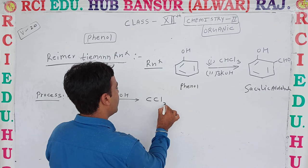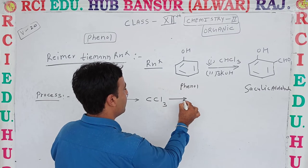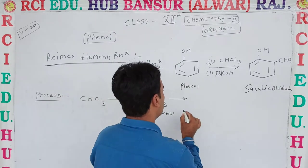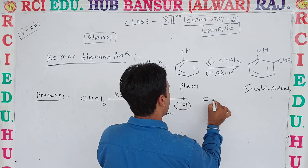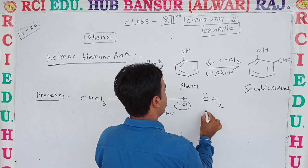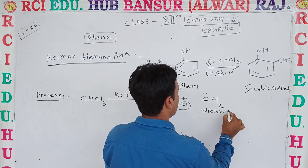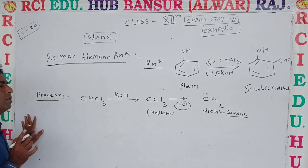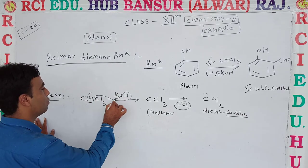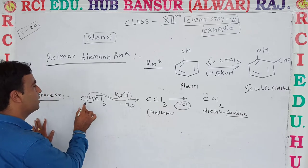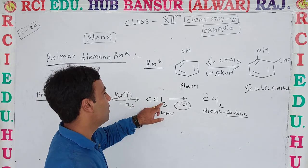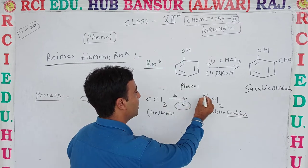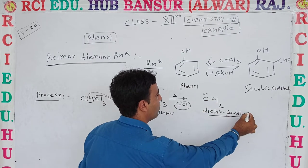The trichloride carbanion is unstable and decomposes further — Cl⁻ is removed, and CCl2 is formed, that is called dichlorocarbene. Dichlorocarbene is the intermediate formed in this step. H⁻ is removed from CHCl3 first, leaving CCl3⁻; then on heating, one Cl atom leaves in the aqueous medium, and CCl2 — dichlorocarbene — is formed.